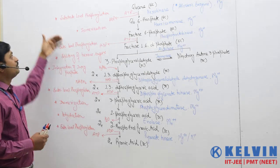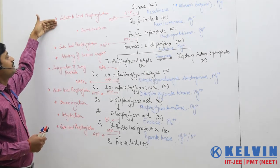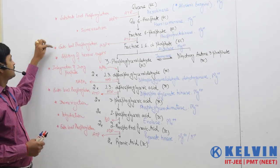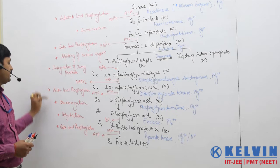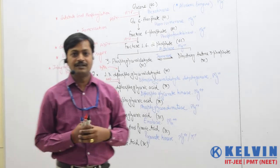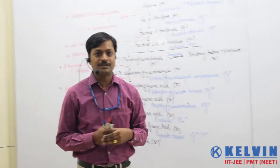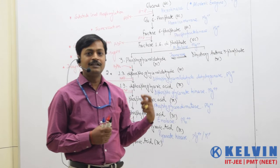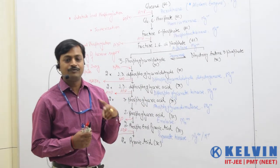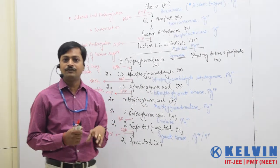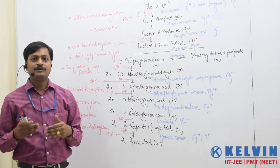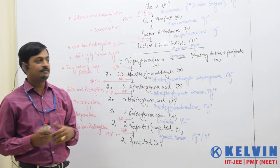If we count the substrate level phosphorylation steps — 1, 2, 3, and 4 — there are four steps which are substrate level phosphorylation. Finally, from substrate level phosphorylation we have two ATP molecules formed per molecule of glucose oxidized during respiration.